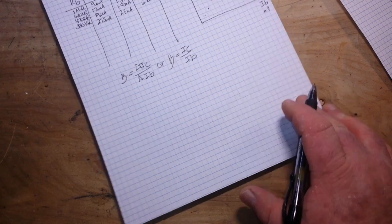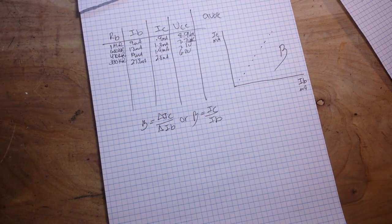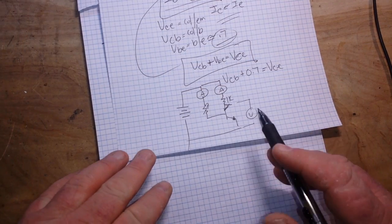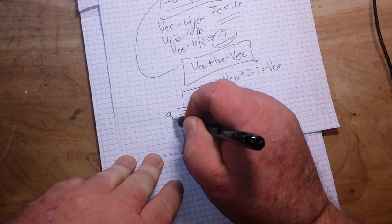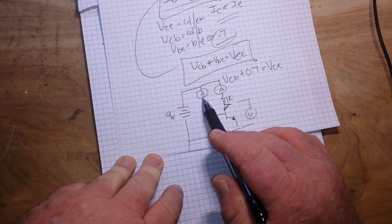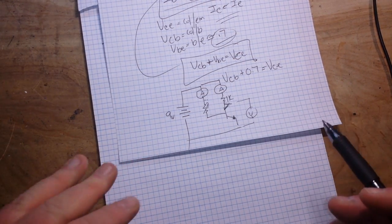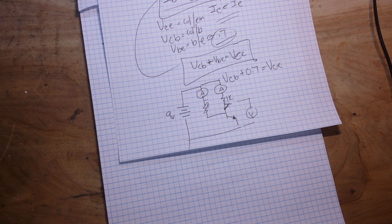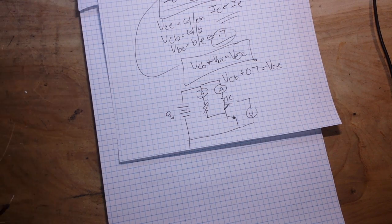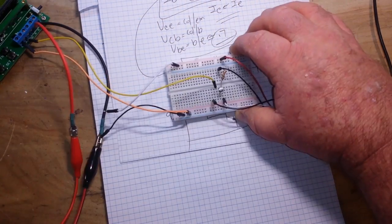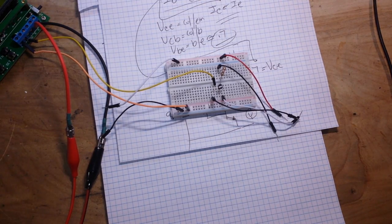So that is a basic introduction to how you can characterize transistors yourself at home. Again, we use 9 volts. Use 2 ammeters, 1 voltmeter. You don't need thousands of dollars in equipment.